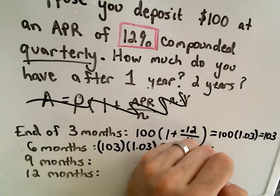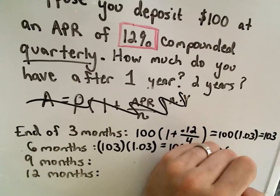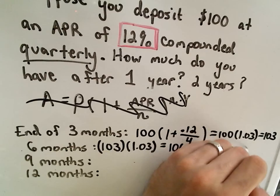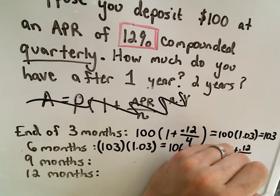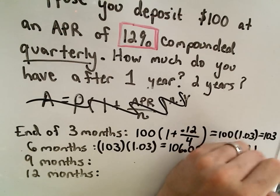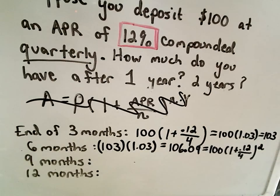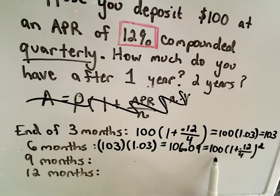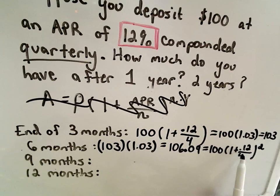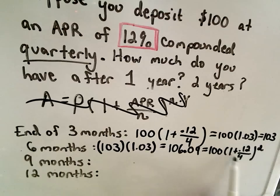And notice we could simply rewrite this actually as 100. And we've taken 1 plus our APR, divided it by the number of compoundings, which is 4. And now we've simply squared that number. So we took 100 and we multiplied it by 1.03, and then we multiplied it by another 1.03. That's what all this really says.